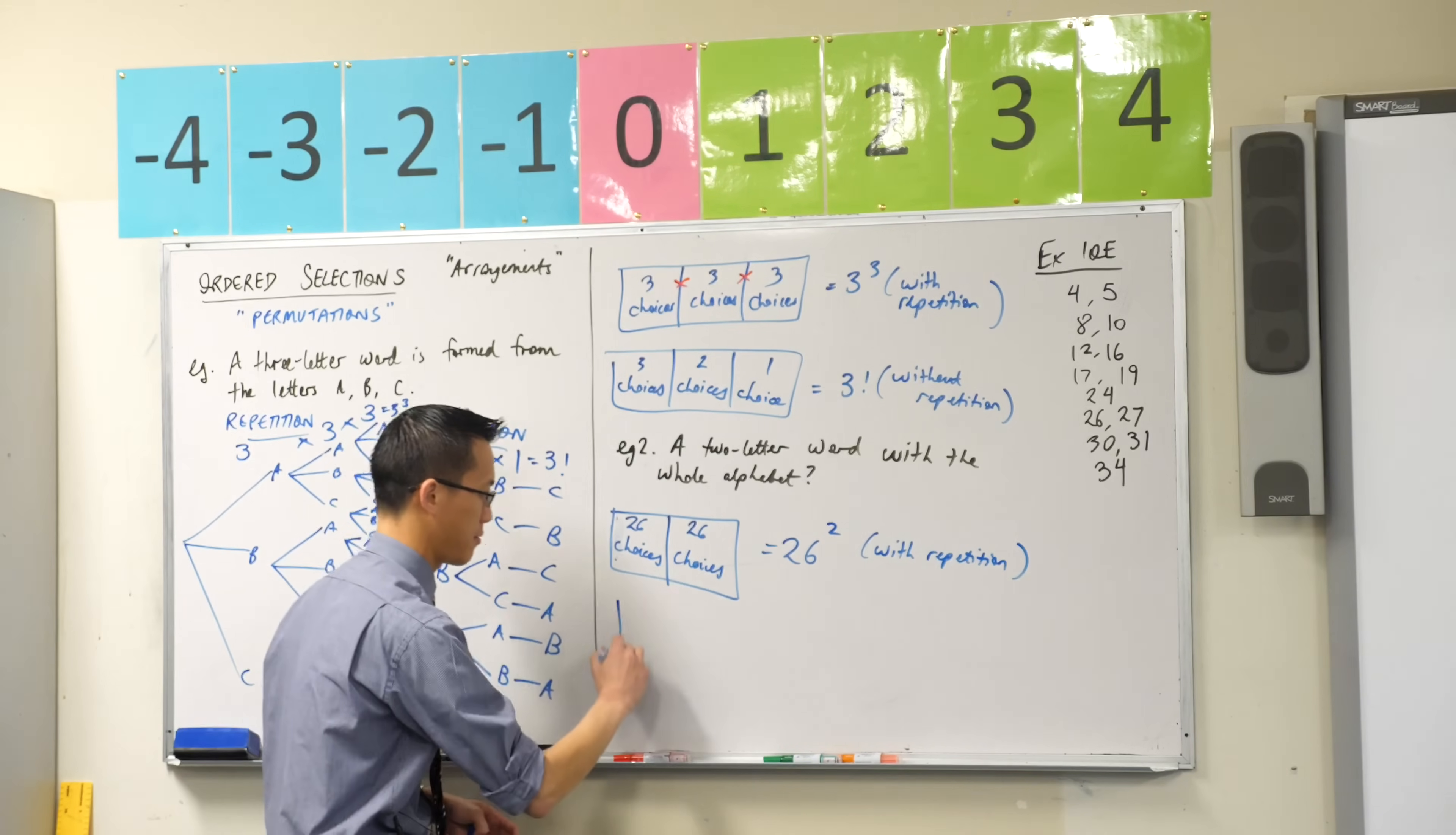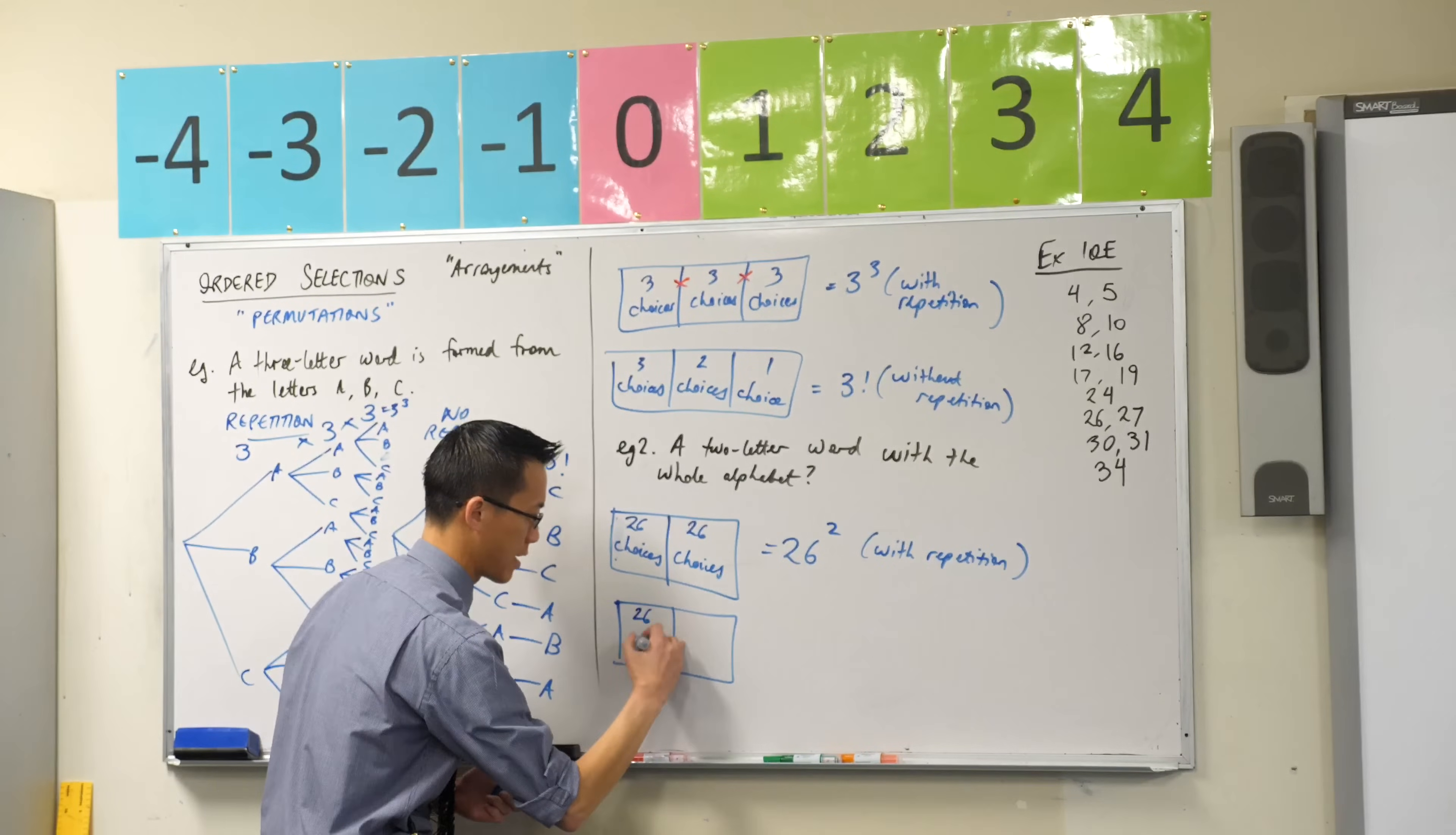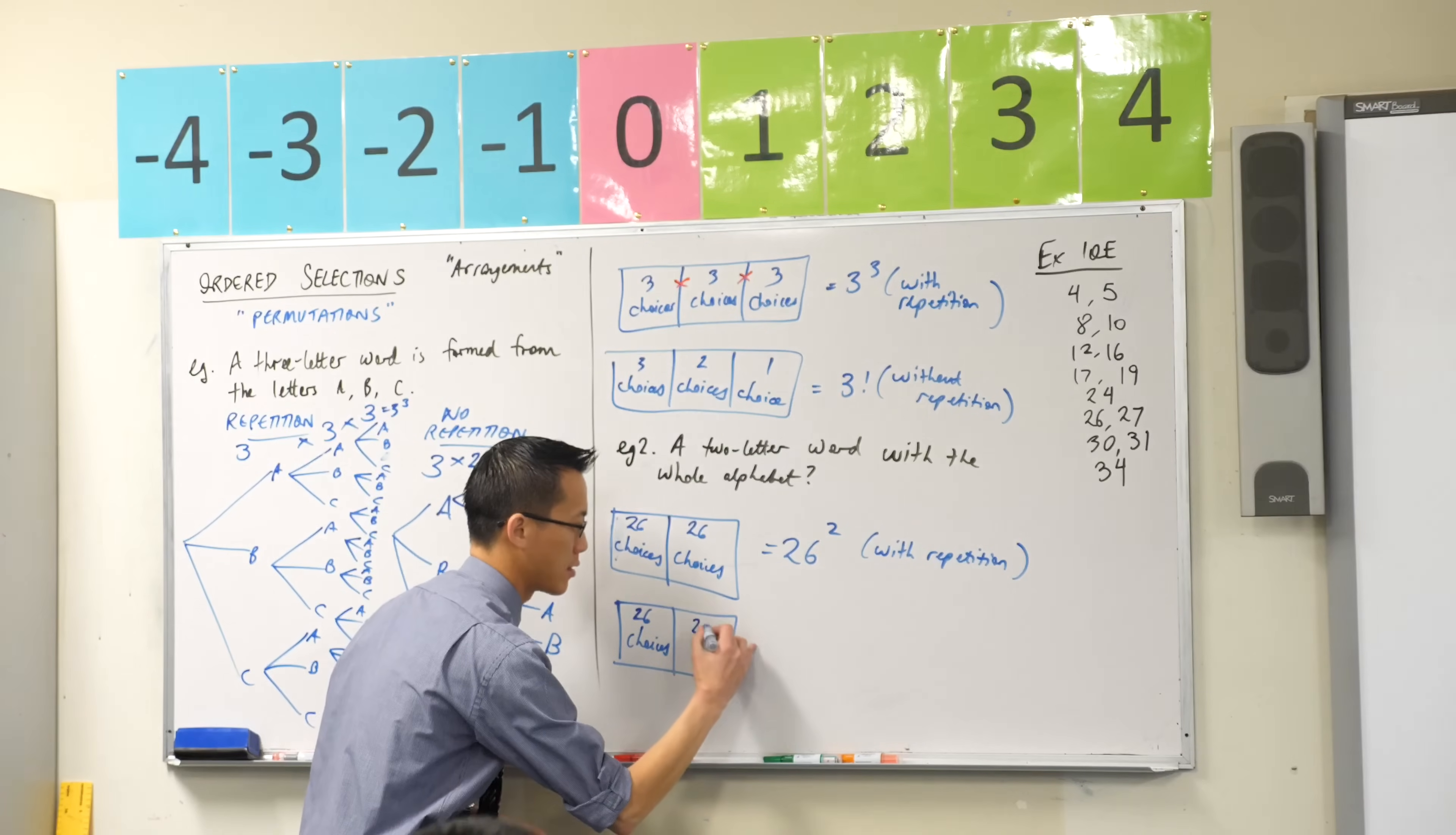And if I said without, no repetition allowed, without replacement as it were, how many choices do I have for my first letter? 26, I haven't picked out any. But having selected that first letter, now one is out of the running. So for my second letter, I only have 25 choices left.